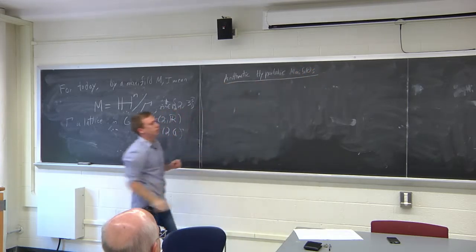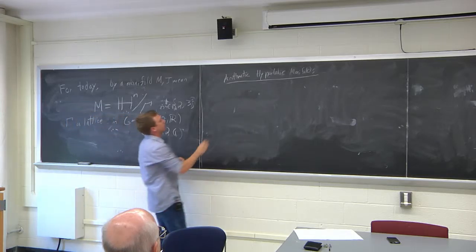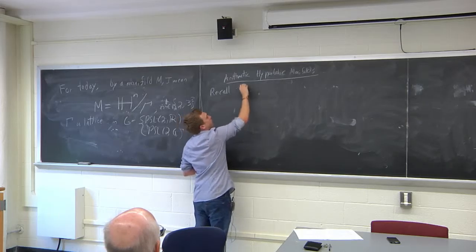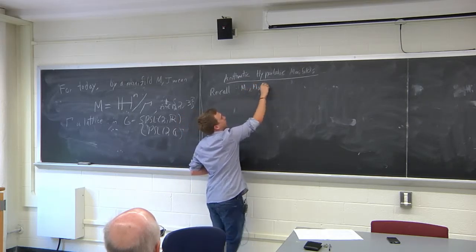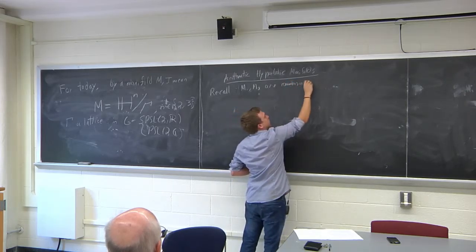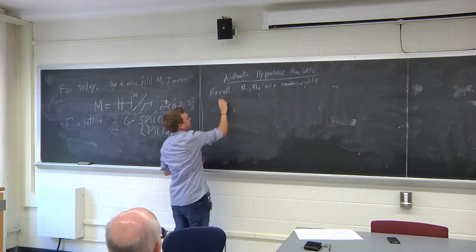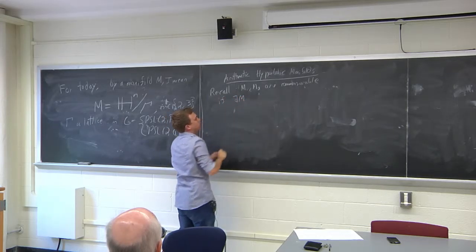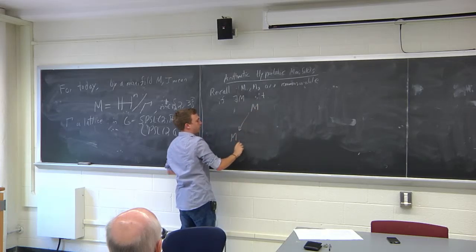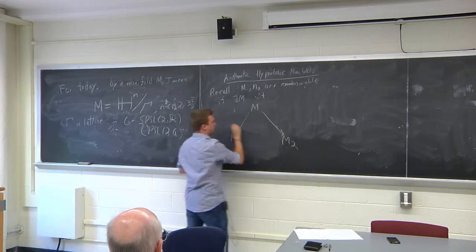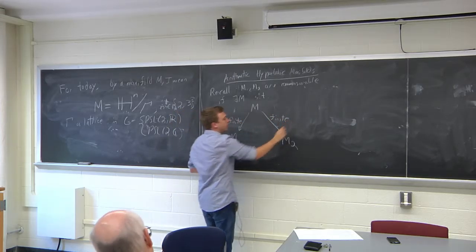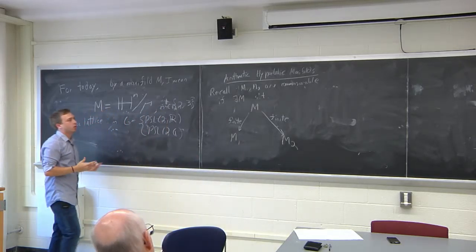To get there, I'll briefly recall the definition of commensurability. We say M₁ and M₂ are commensurable if there exists some other M such that M finitely covers both M₁ and M₂ — both are finite sheeted covers. So if M₁ and M₂ share a finite sheeted cover, we call them commensurable.